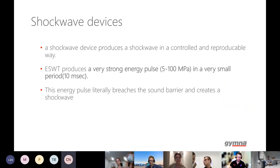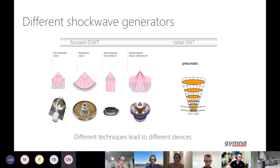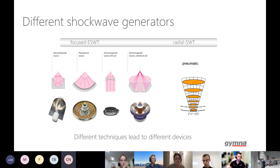The generation of shockwave — there are different techniques. The focused shockwave and the radial shockwave differ in their dispersion of energy inside the body. Focused shockwave goes to a precise point inside the body, really focused like a laser beam on a half-millimeter square. Radial shockwave gets a dispersion.